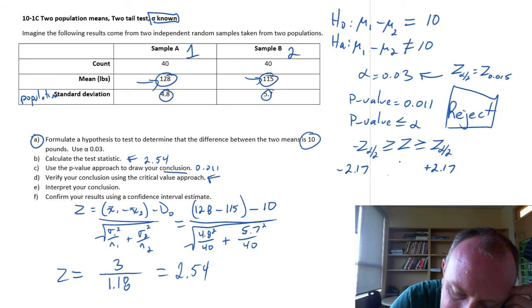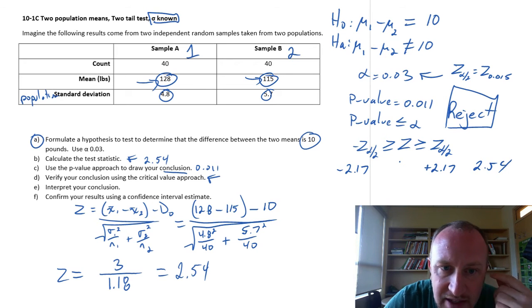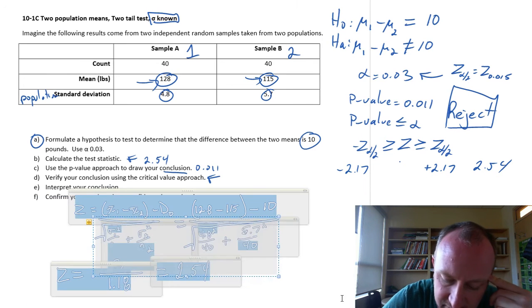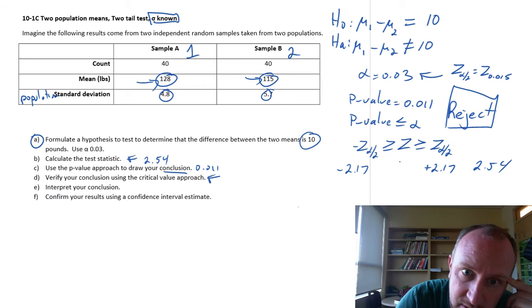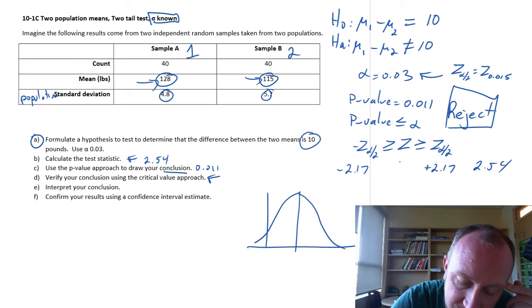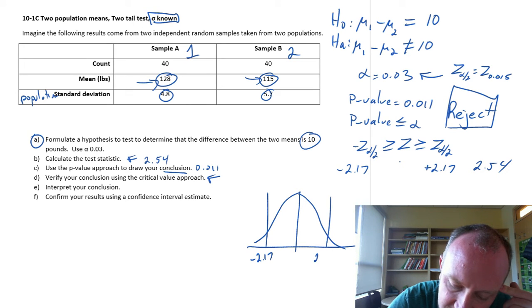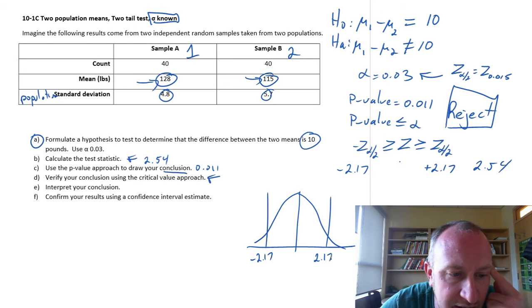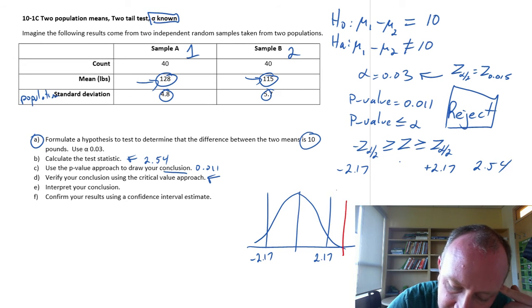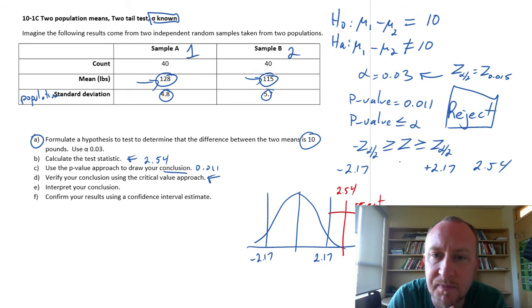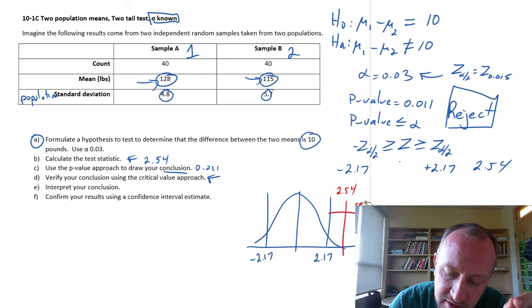Our test statistic is 2.54. Well, that's way out here somewhere. So we'll reject if it's less than negative 2.17, reject if it's greater than positive 2.17. And here's that test statistic, 2.54 is somewhere way out here. So that is in that rejection space. So that's good. Using the critical value approach, we get the same conclusion.